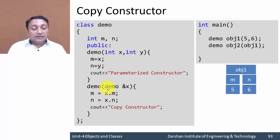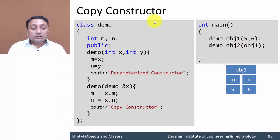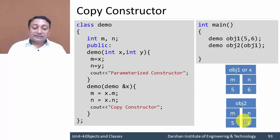In the copy constructor, we create a reference to object1 called x. So object1 can also be referred to as x. If we write object1.m and object1.n, it is the same as x.m and x.n. We are ultimately copying object1 to object2. Object1 is recognized as x because we created a reference, and values 5 and 6 will be assigned to m and n of object2.